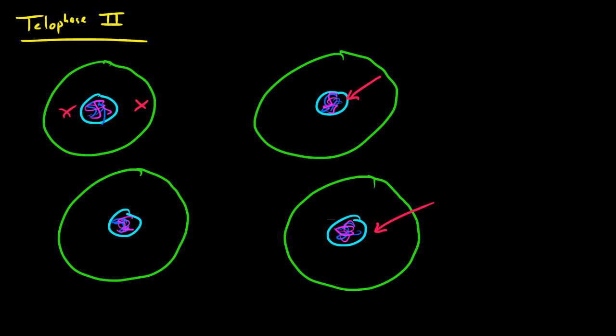Now a couple other key things we want to take away: at the end of cytokinesis you have 4 haploid daughter cells. Remember I said that diploid had 46 chromosomes or 2 sets of chromosomes and haploid pretty much means 1 set or 23 chromosomes.